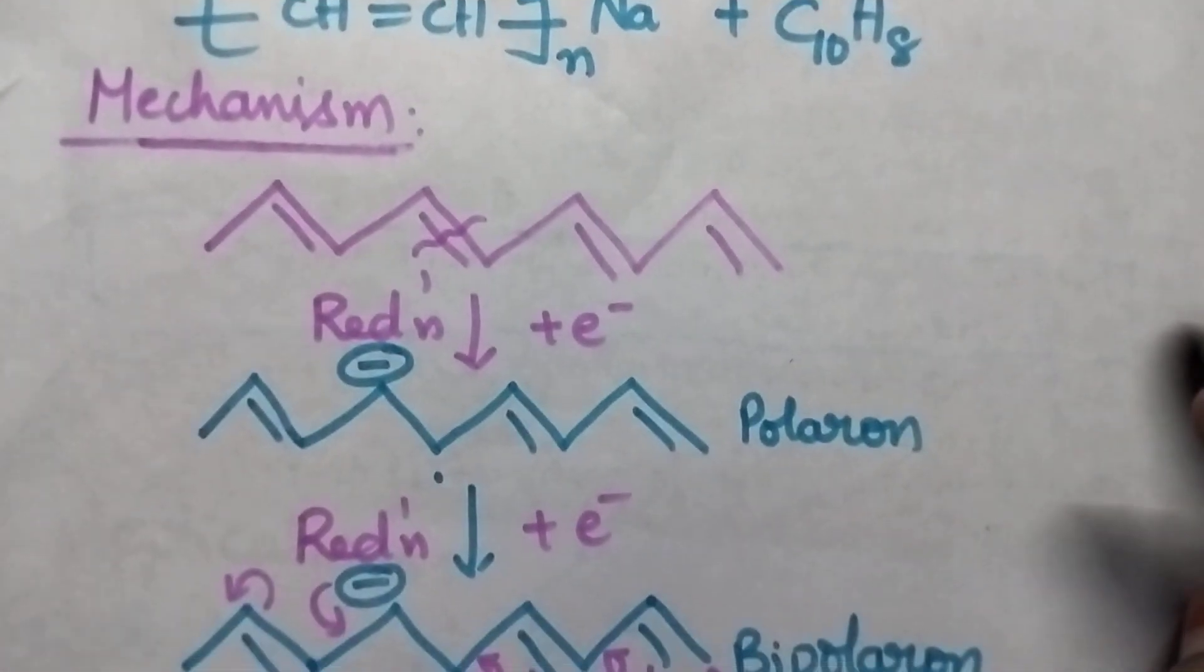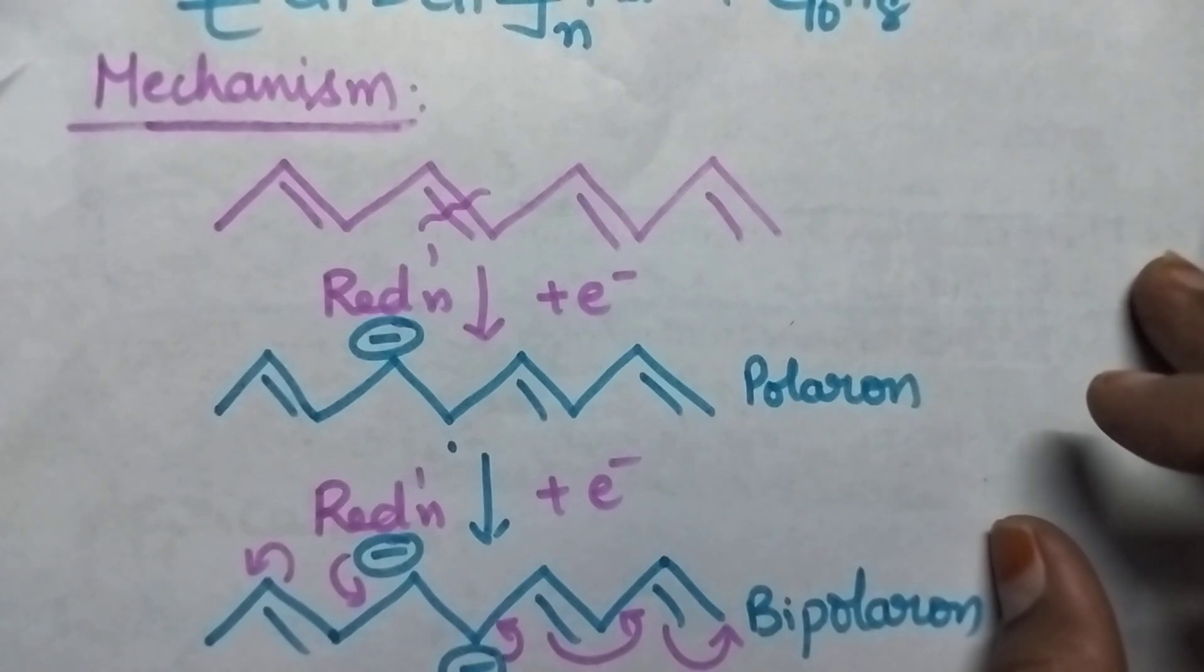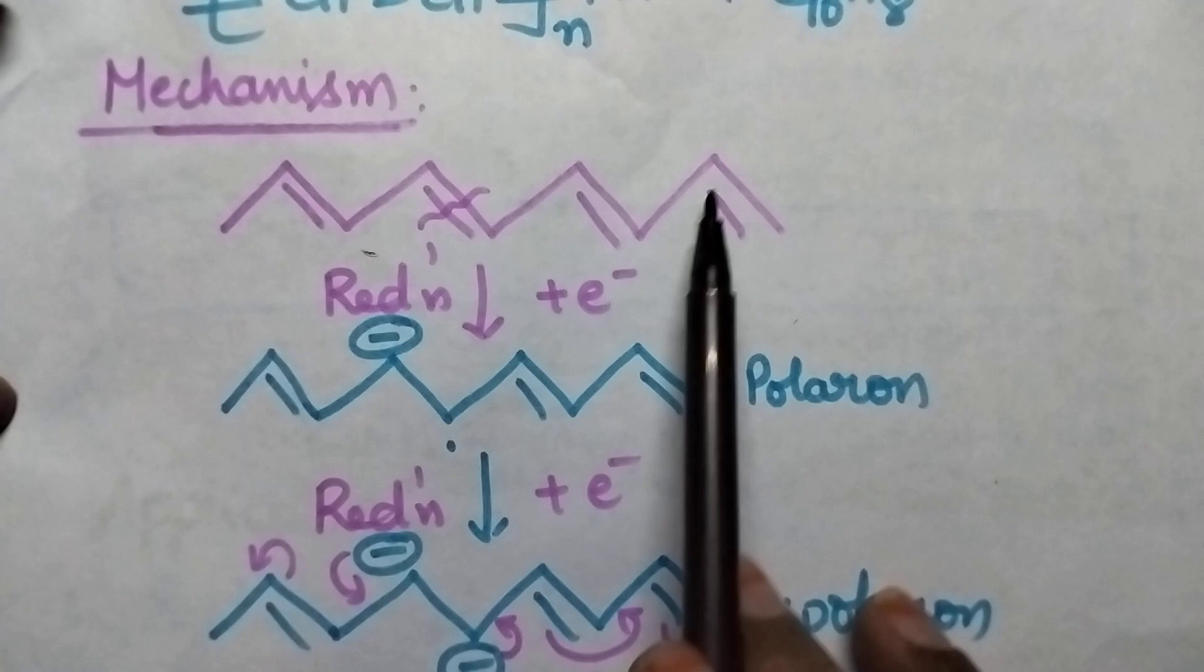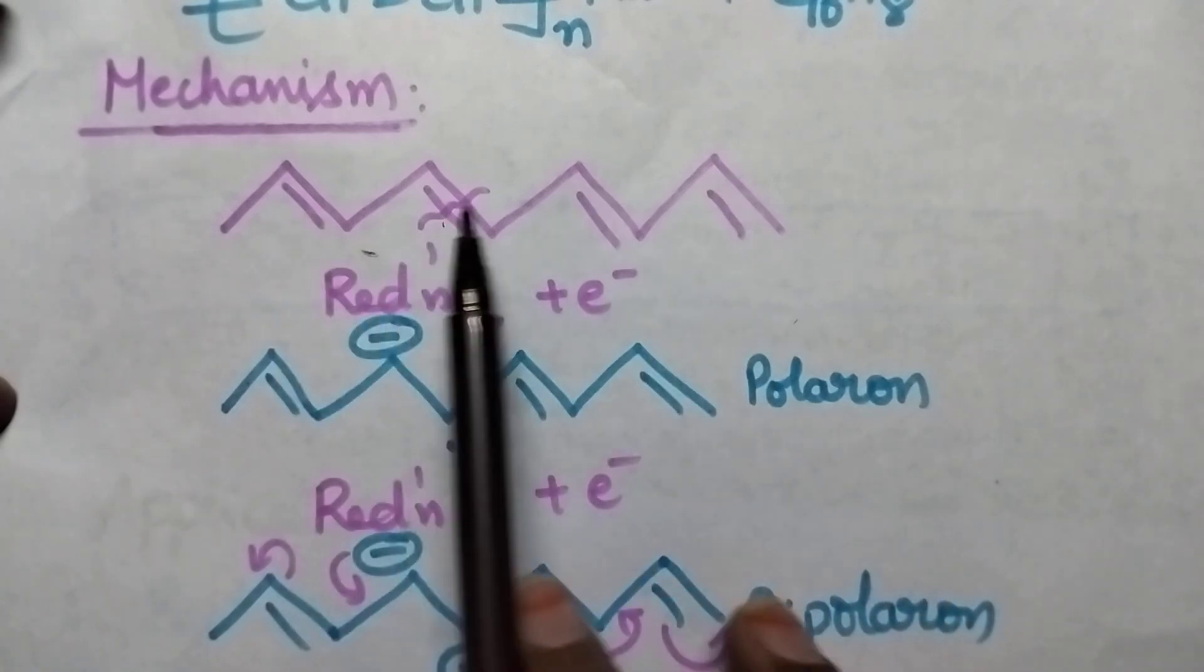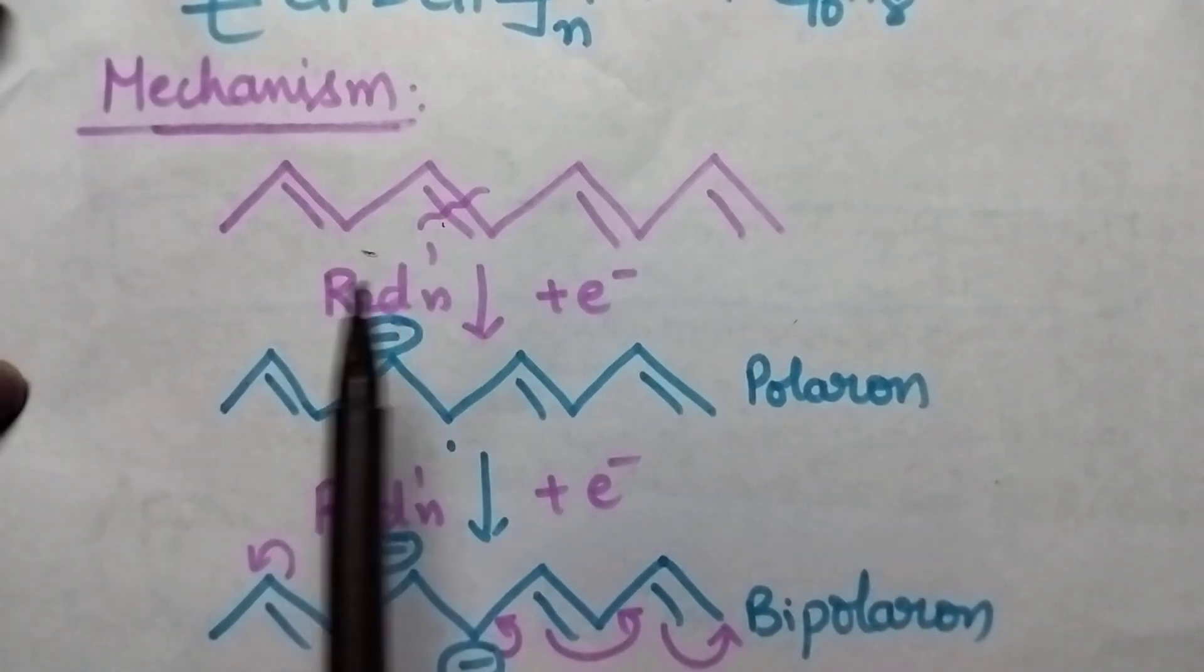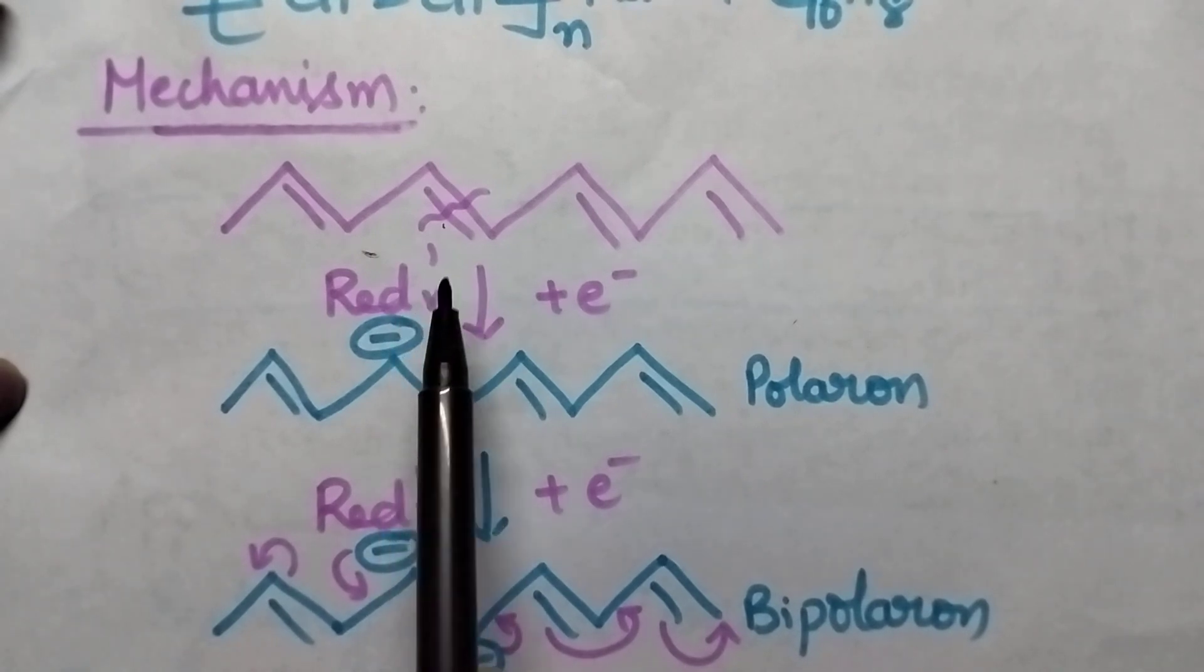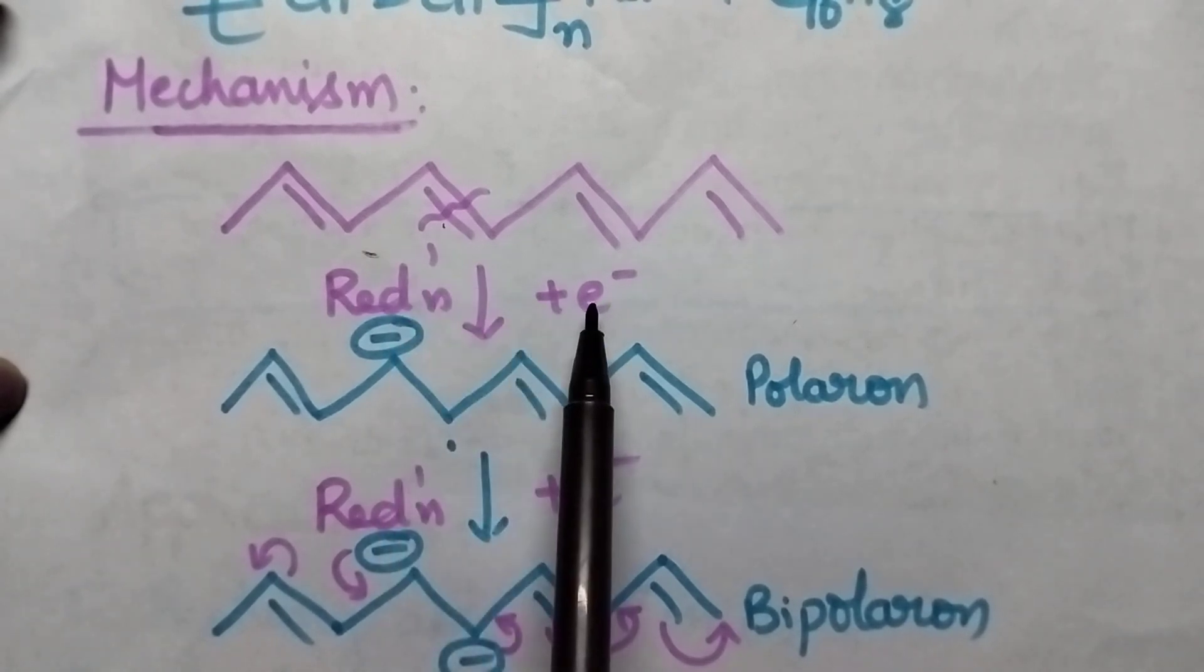Coming to the mechanism of n-doped conducting polymers, here this is the structure of polyacetylene. It consists of alternative double bonds. Whenever it is treated with sodium naphthalate it undergoes reduction. Reduction means addition of electron.